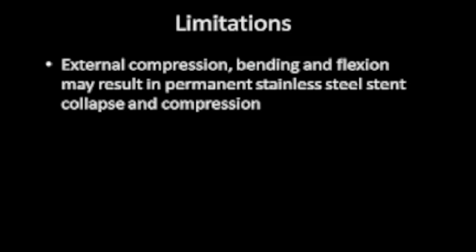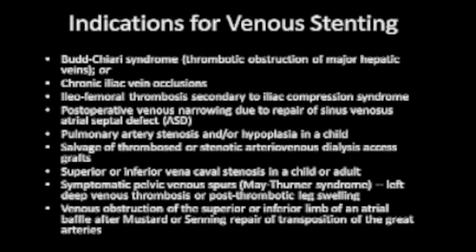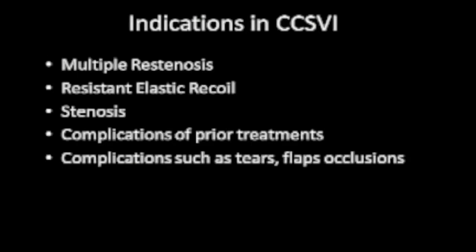Limitations arise any time we place a stent in the body, such as external compression from a muscle or, as will be shown shortly, compression of a vein by an artery. The indications for venous stenting from the Society of European and Interventional Radiology include a whole list of syndromes. Notably, CCSVI is not yet listed, but there are indications for CCSVI such as multiple restenosis, elastic recoil, stenosis, complications of prior treatments, and complications from tears, flaps, or occlusions.